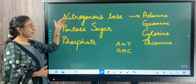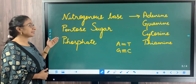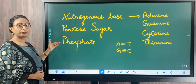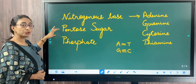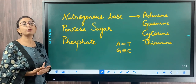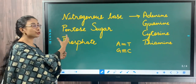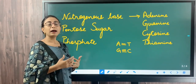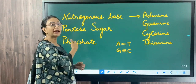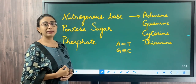In addition to the nitrogenous base, we have two more important components: the pentose sugar and the phosphate group. It is the pentose sugar and the phosphate group which form the backbone of the DNA. Now I will show you a diagram of how the nitrogenous base, pentose sugar, and phosphate are arranged in the DNA molecule.